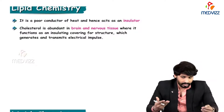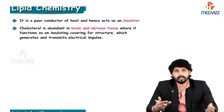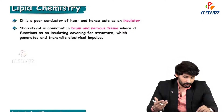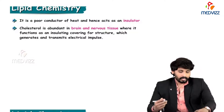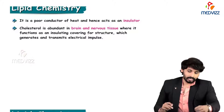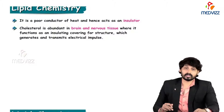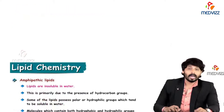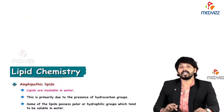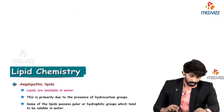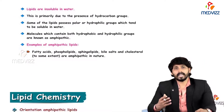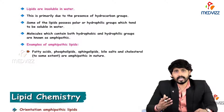Regarding properties of cholesterol, it is a poor conductor of heat and hence acts as an insulator. Cholesterol is abundant in brain and nervous tissue, where it functions as an insulating covering for brain structures, which is helpful in the transmission of nerve impulses.